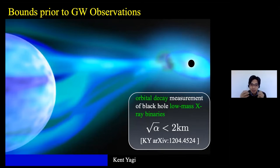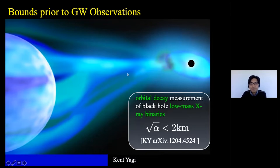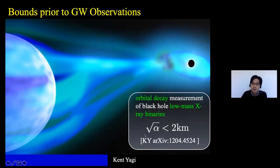There is such a system called the GW X-ray binary system with one black hole component, and there are known systems where orbital decay has been measured consistent with GR. Based on this, we can place an upper bound on the coupling constant, because if α is too large, the emission of scalar radiation becomes too large and the orbital decay rate measurement would be inconsistent with observations. By taking this measurement, I placed an upper bound: the square root of α, which has units of length, should be around 2 kilometers.